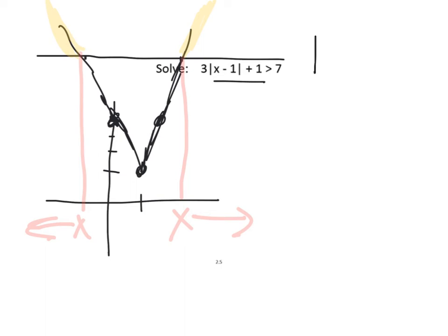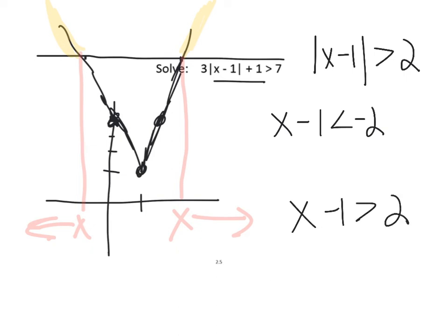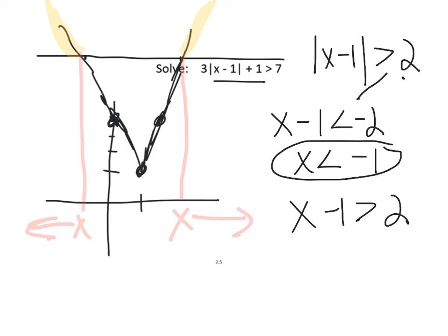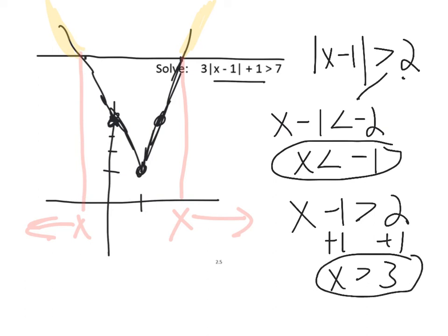Isolating gives |x - 1| > 2. Since the graph is above the line on both outer sides, x - 1 must be less than -2 or greater than +2. Adding 1 to both sides: x < -1 or x > 3. In interval notation, the answer is (-∞, -1) ∪ (3, ∞), open at both endpoints since it's strictly greater than, not equal to.